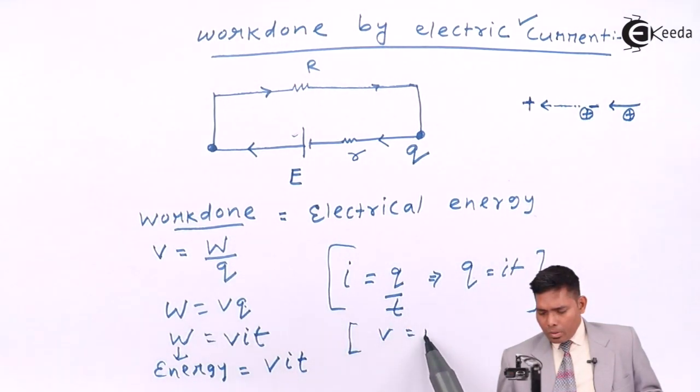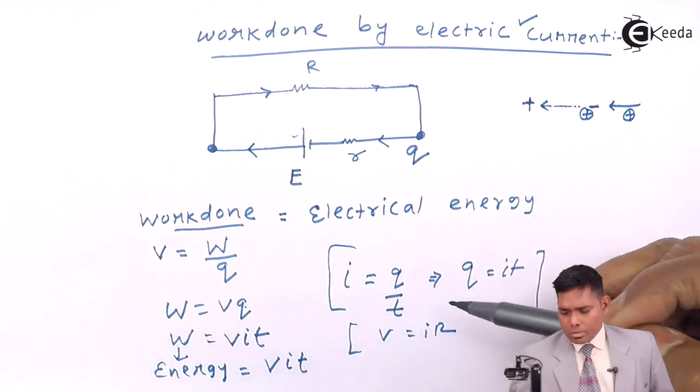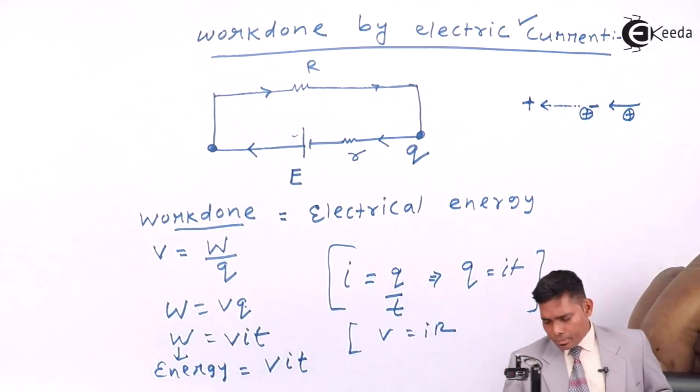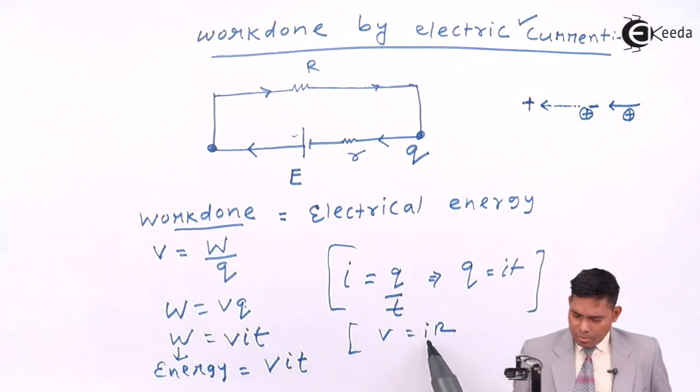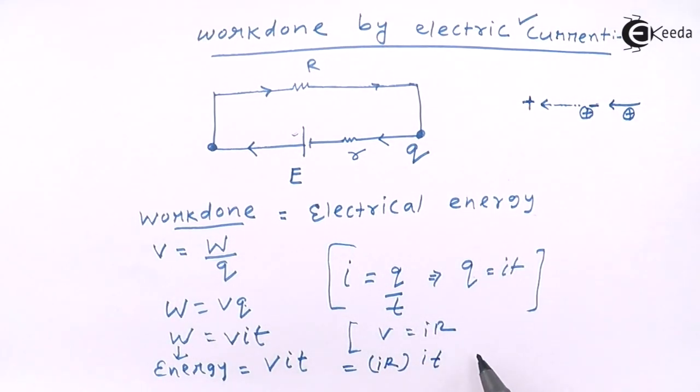Again, we know that V equals I into R, neglecting the internal resistance. If V equals I into R, then I can write this as I into R into I into T. This is I square R T.